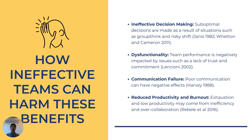Now let's talk about how ineffective teams can harm these benefits. The first problem is bad decision making — sometimes people in a group take riskier decisions than they would alone because they just go along with what others are saying. Second is dysfunctionality: issues like lack of trust and avoidance of responsibility, like a machine where one part isn't working and the whole operation is messed up. Third is communication breakdown — like the game of telephone, messages get mixed up and people get confused, leading to bad results. Fourth is burnout and reduced productivity: if there's too much teamwork and not enough individual focus, people get tired and less gets done.